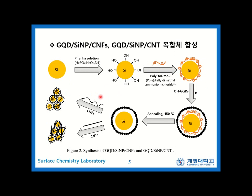To synthesize the final composites, we used piranha solution to make silicon hydrophilic. To the hydrophilic silicon particles, we added polydopamine to make the particle surface positively charged. Then, using electrostatic attraction, we combined the OH-GQDs with the positively charged silicon particles. Through annealing, we successfully removed the excessive polydopamine from the silicon and added carbon nanomaterials to the GQD silicon composite.